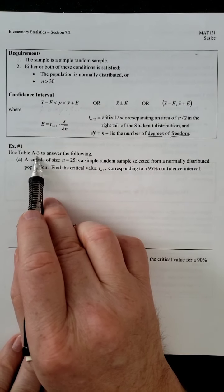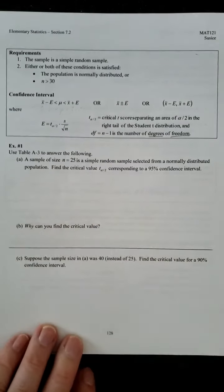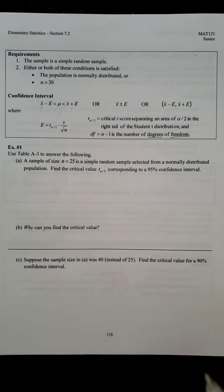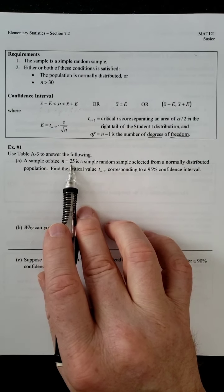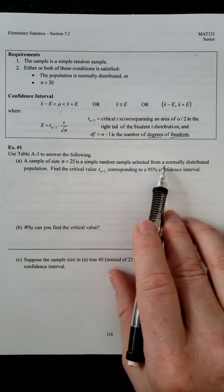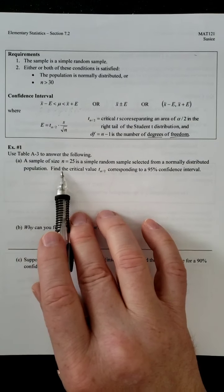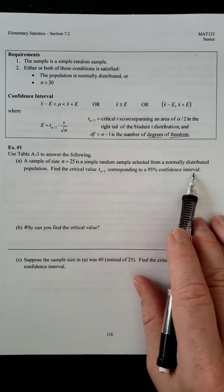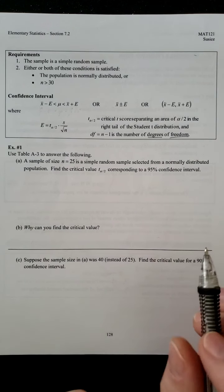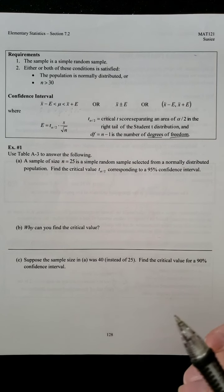Now, there's a table in your book, table A3. That's what you're going to have to refer to to find your T scores. So it says a sample of size N equals 25 is a simple random sample selected from a normally distributed population. Find the critical T score corresponding to a 95% confidence interval. Now, remember what we did back with the Z scores.